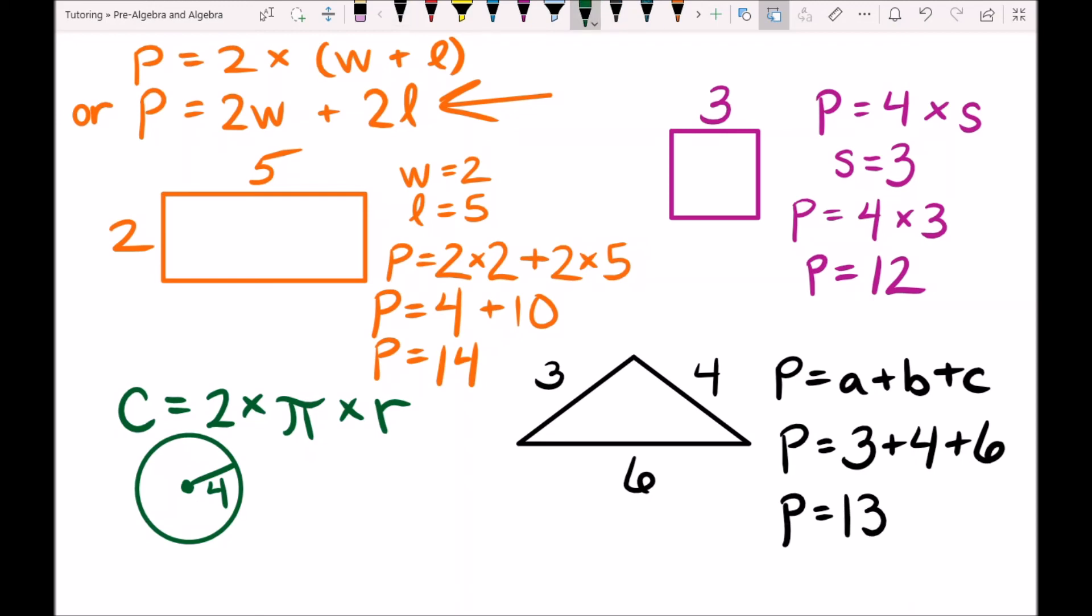And our circle. The circle has a perimeter called the circumference, and the circumference C is equal to 2 times pi times our radius which is 4. Because all of our three terms are being multiplied together we can multiply in a different order than what's written.